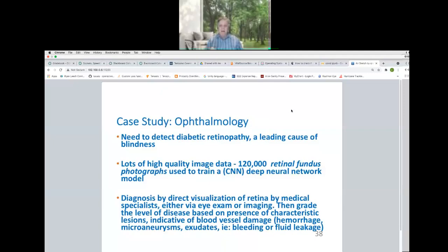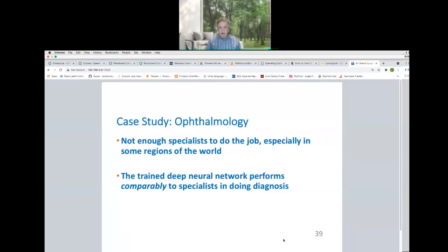One other case study to finish off with somebody else's stuff, but I think this is a really interesting one. You wanted to detect diabetic retinopathy, so the leading cause of blindness. There are lots of images, 120,000 retinal fundus photographs. That's a lot that are used to train a neural network. The diagnosis is by direct visualization by medical specialists through an eye exam or imaging. And then you grade the level of disease, the presence of lesions that are characteristic of blood vessel damage, like hemorrhages, microaneurysms, et cetera. And you can get, in the world, there are just not enough specialists to do this, especially in some places. But the deep neural network is just about as good as specialists. So if you go to a place where you don't have specialists, and this would be true in regions within the United States also, you'd have to go hundreds of miles to get to a specialist. You can use this system. You can just have an automated system look at your eyes with some dilation, which a local doctor can put in, and tell you whether you have this problem. So that's, I think, a big win.